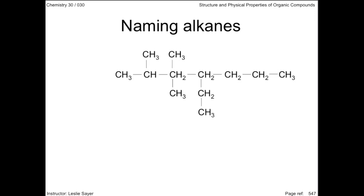Using the steps just learned, we'll name this compound. First, we identify the root name by counting the number of carbon atoms on the main chain. There are 7 carbon atoms in a continuous row, so the root name and suffix is heptane.